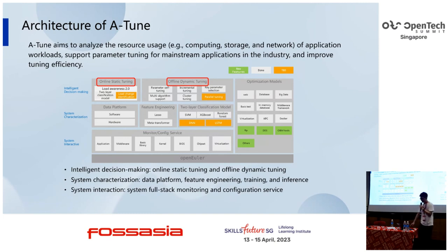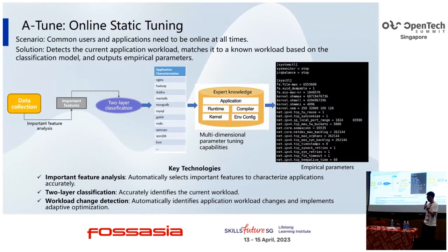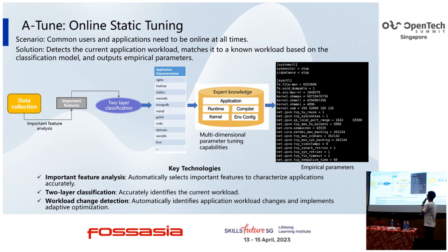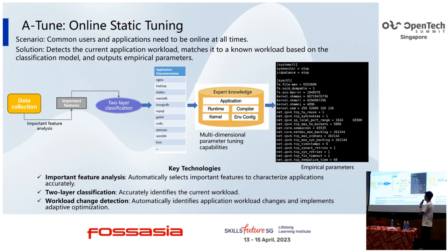I will now detail the two parts: online static tuning and offline dynamic tuning. The scenario for online static tuning covers common applications that need to be online at all times. ATUN detects the current application workload, matches it to a known workload based on a classification model, and outputs empirical parameters. Key technologies include important feature analysis: ATUN automatically selects important features to characterize applications accurately, with a two-layer classification to accurately identify the current workload.